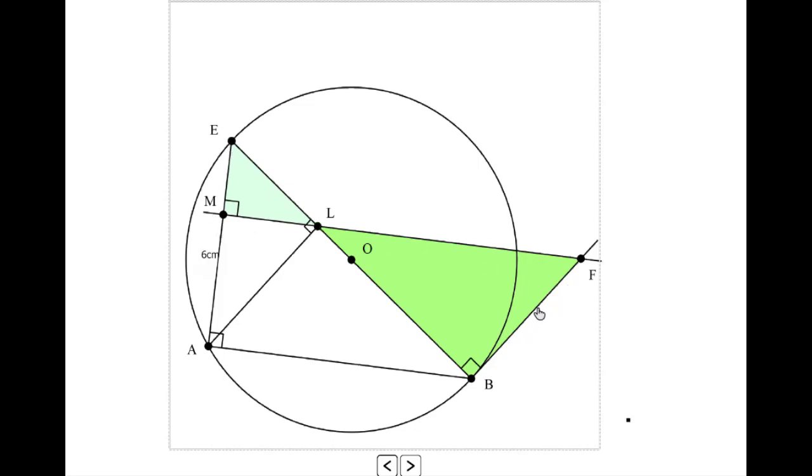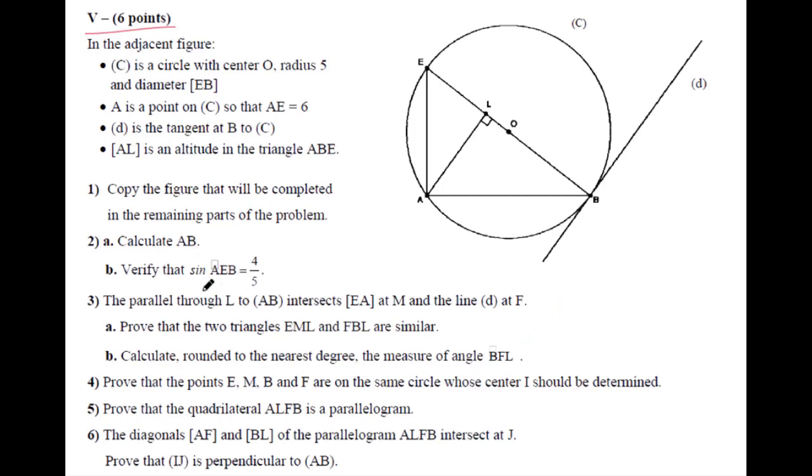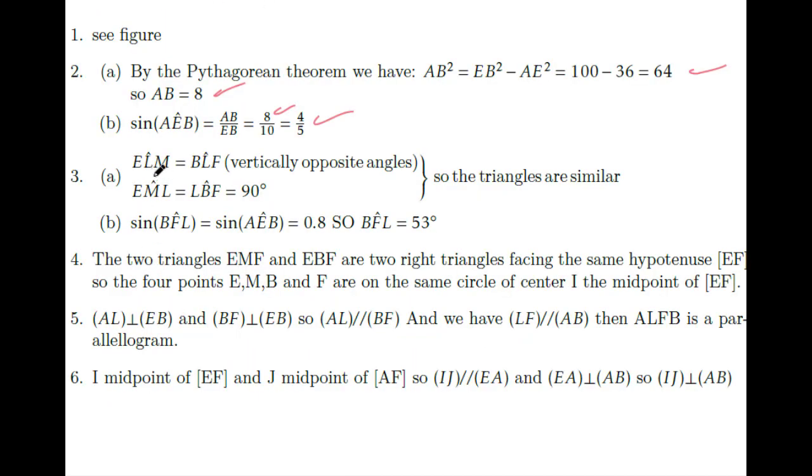The triangles EML and LFB have right angles at B and M. We have two opposite angles that are equal. Angle EML equals angle LBF equals 90 degrees, so the triangles are similar.